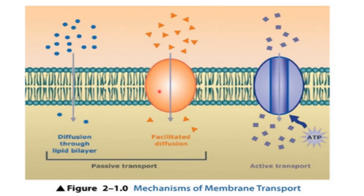Active transport is like pumping water uphill. It is called uphill transport — it always goes from lower concentration to higher concentration. It always goes through carrier proteins. Directly or indirectly, it requires energy.